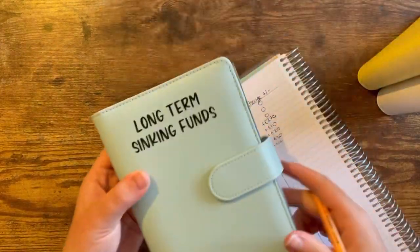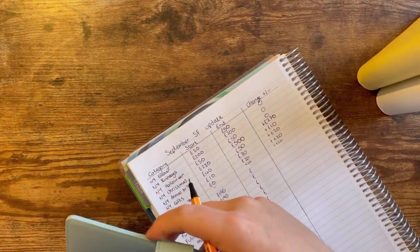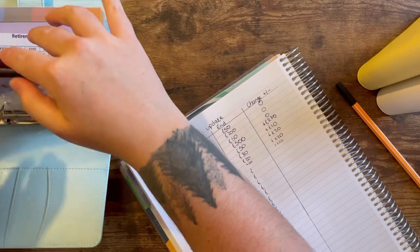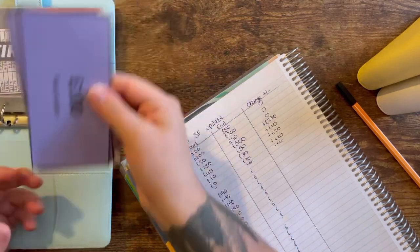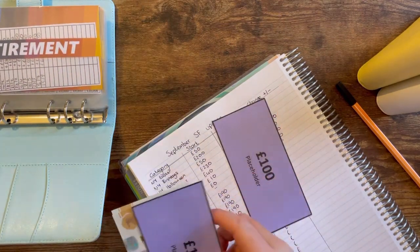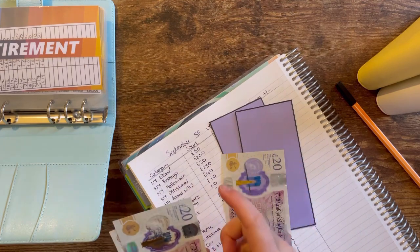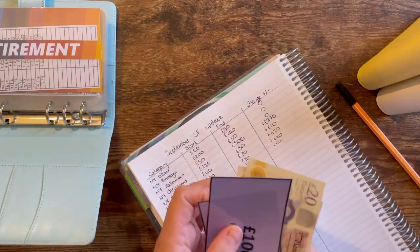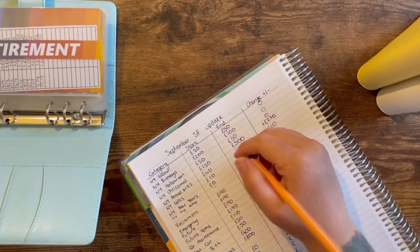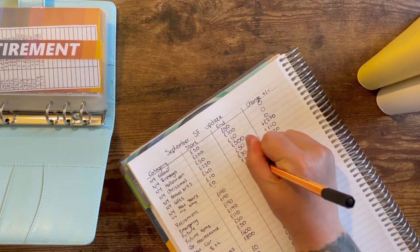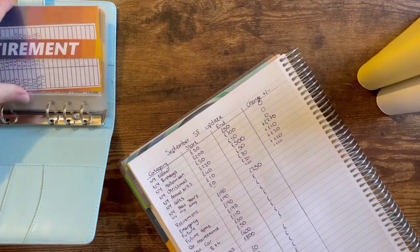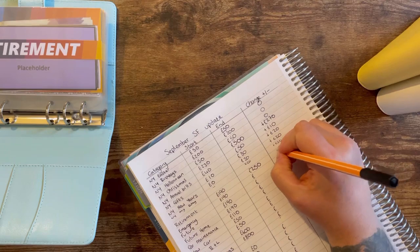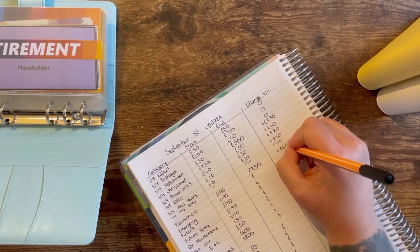Moving on now to my long term sinking funds. I'm going to start with retirement. Retirement is at 250 pounds, so that is a positive change of 60 pounds.